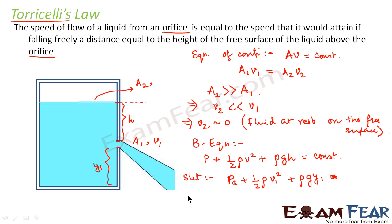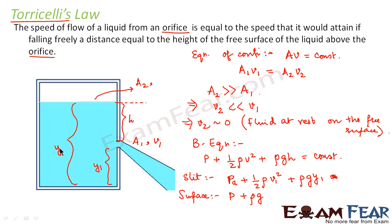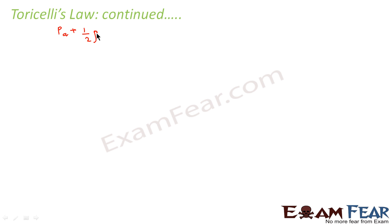Similarly, writing the Bernoulli equation for the free surface: the pressure at the surface is P, the velocity V2 = 0 so the kinetic term vanishes, and the potential energy term is ρg·Y2, where Y2 is the height of the surface from the base. Equating both equations, we get: Pa + ½ρV1² + ρg·Y1 = P + ρg·Y2.